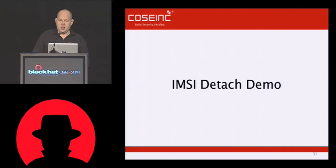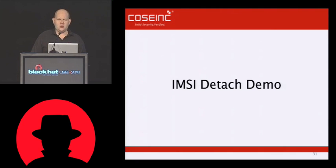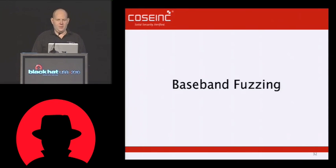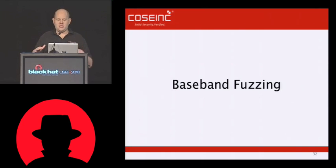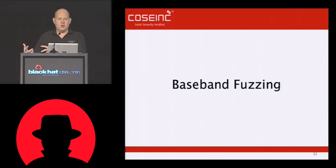Those cover the GSM client-based attacks that I've implemented so far. There's only three of them, but I've only been doing this for about a month or so on the client side. Prior to this, what we were working on is doing fuzzing against mobile phones because we wanted to be able to own everyone that walks by our office. For that, we were doing baseband fuzzing — using a malicious BTS to send packets and try to fuzz the baseband of mobile phones.